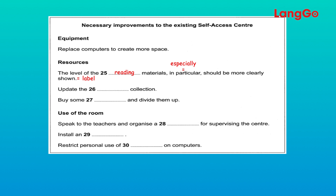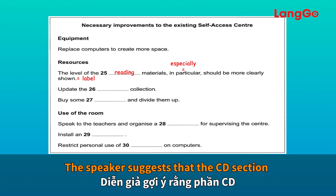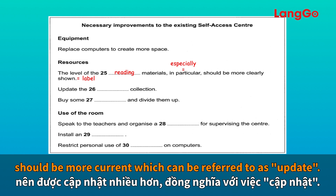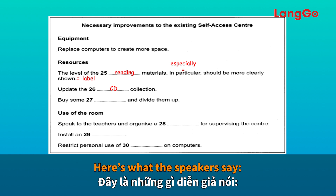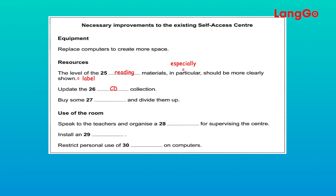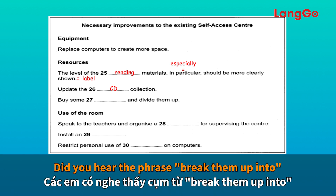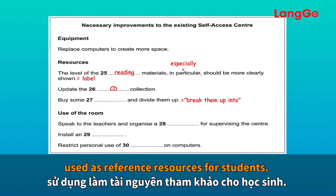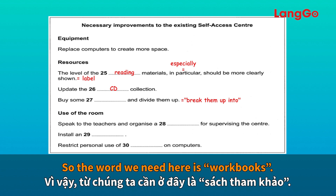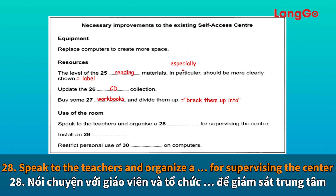Number 26: update the collection — the CD section especially needs to be more current. They should get some that go with the latest course books and make multiple copies. 'More current' can be referred to as 'update,' so the answer is 'CD.' Number 27: buy some and divide them up — the idea of introducing workbooks is raised. If they break them up into separate pages and laminate them they'd be a great resource. 'Break them up' has the same meaning as 'divide,' so the answer is 'workbooks.'